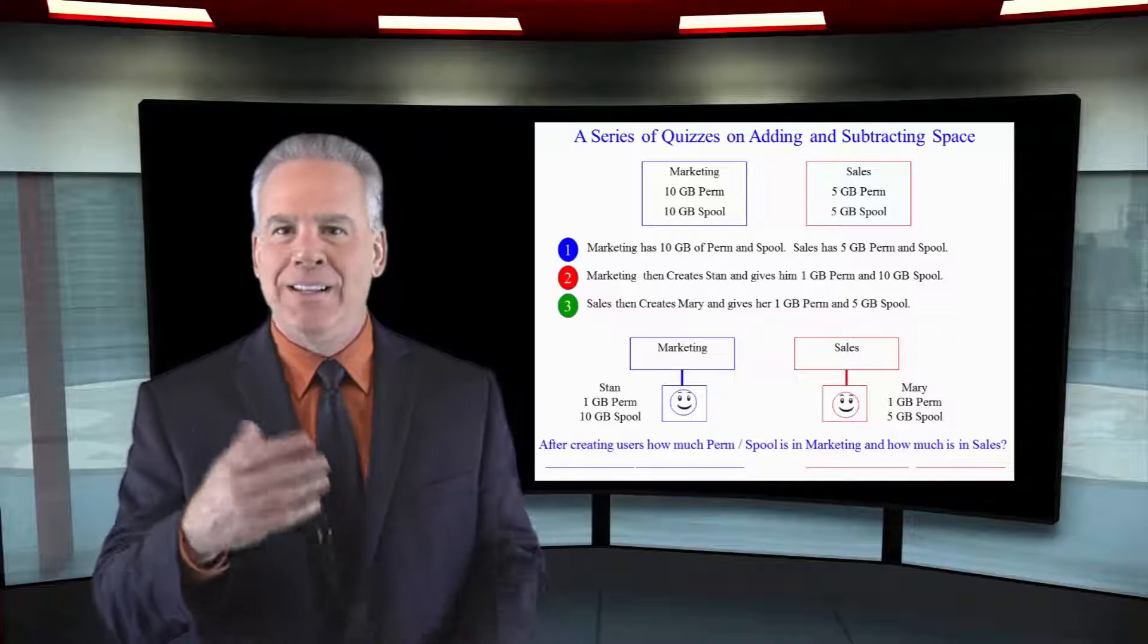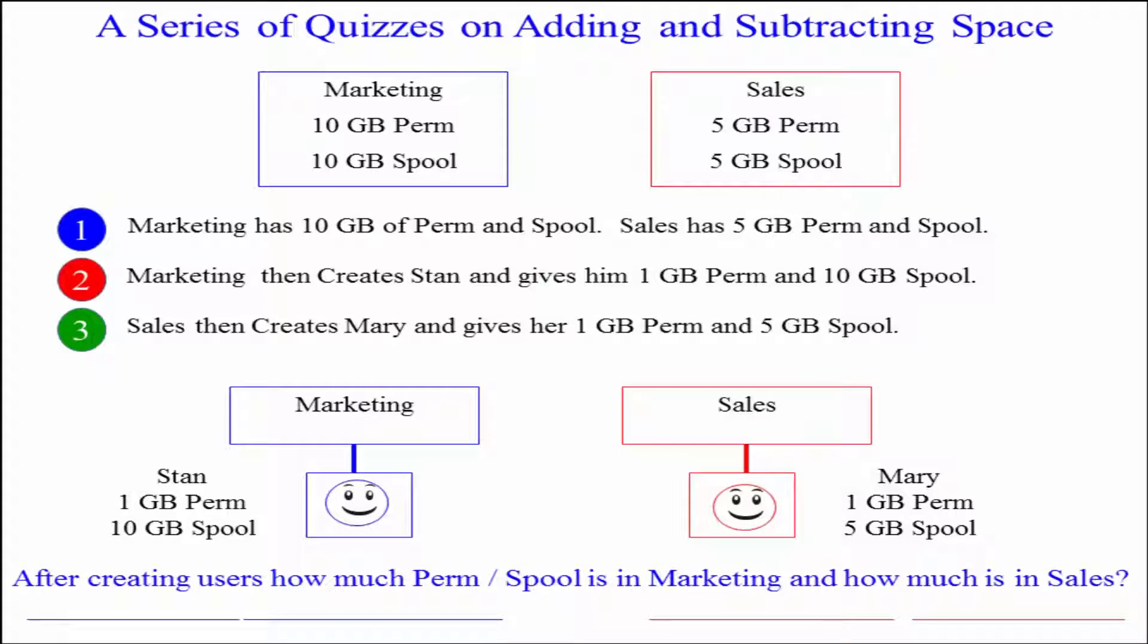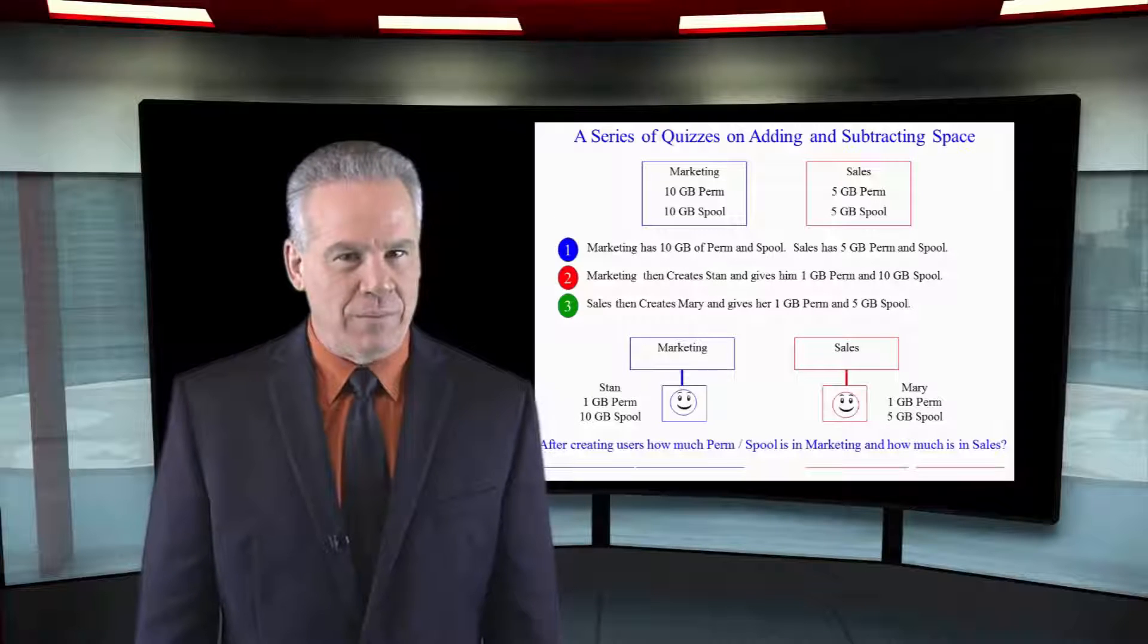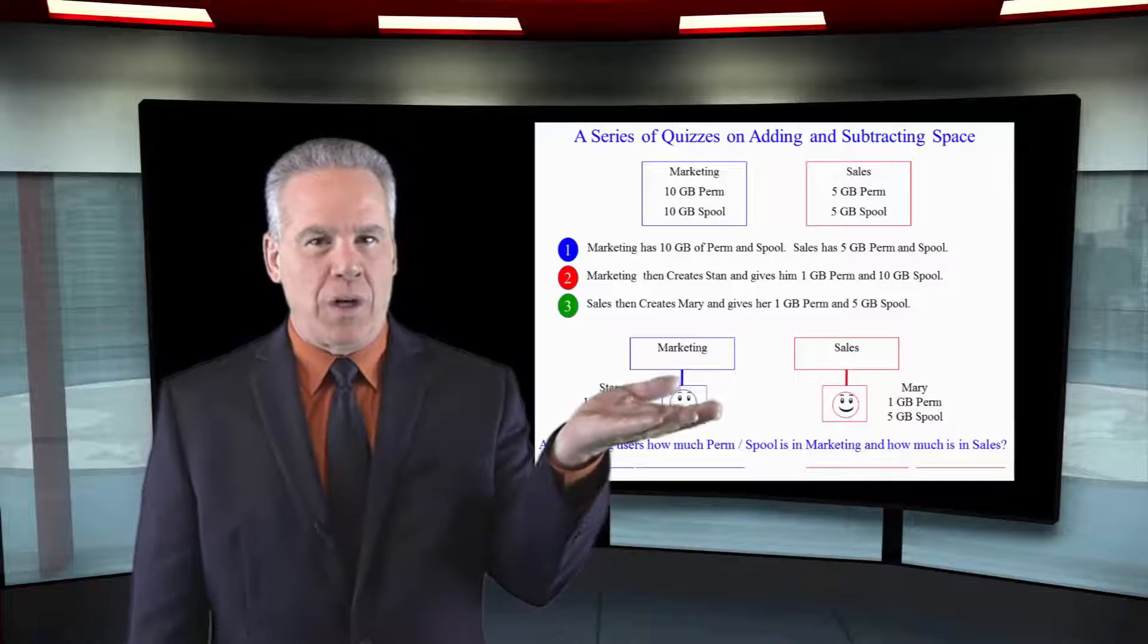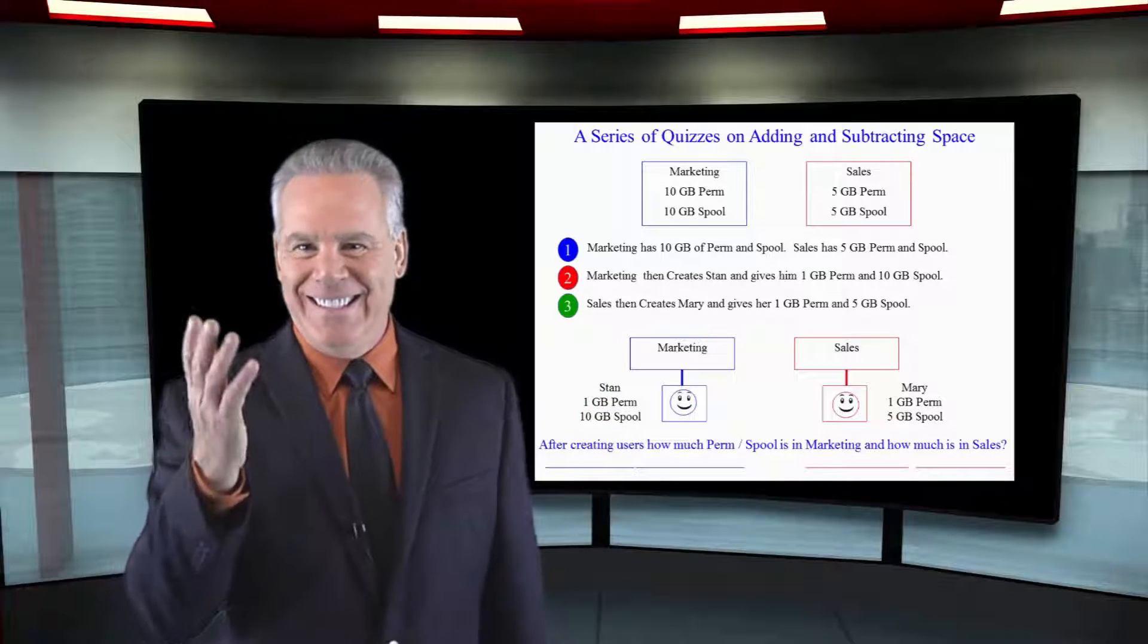Here's the first part of the quiz. Let me set this up for you. Marketing, a database, was given 10 gigabytes of perm, 10 gigabytes of spool. Sales, another database, was given 5 gigabytes of perm, 5 gigabytes of spool. Marketing created a user called Stan and gave Stan 1 gigabyte of perm, 10 gigabytes of spool. Sales created Mary and gave her 1 gigabyte of perm, 5 gigabytes of spool. After these users were created, how much perm and spool is in Marketing and how much perm and spool is in Sales?